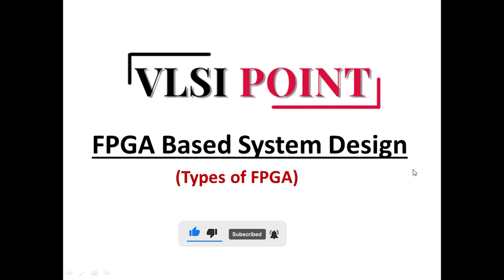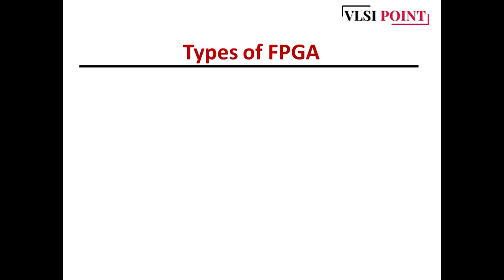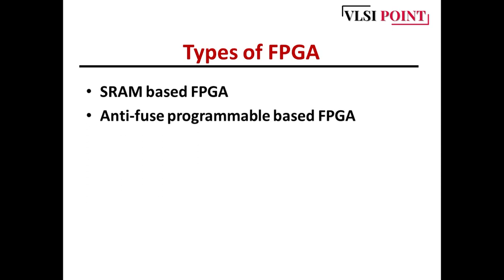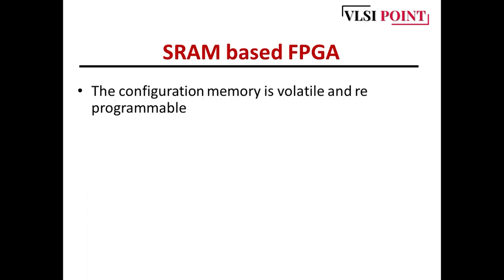Let's get started. First we will see how many types there are of FPGA. Mainly we have three types: the first one is SRAM based FPGA, the second one is anti-fuse programmable based FPGA, and the third one is flash based FPGA.